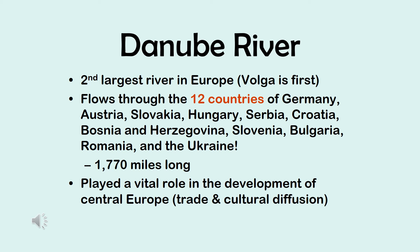The second river is the Danube River — it's the second largest river in Europe; the Volga is the first, and that goes to Russia. The Danube passes through close to 12 countries, from Germany through Ukraine, spanning about 700 miles long. It has played a very vital role in the development of Central Europe through trade and cultural diffusion.